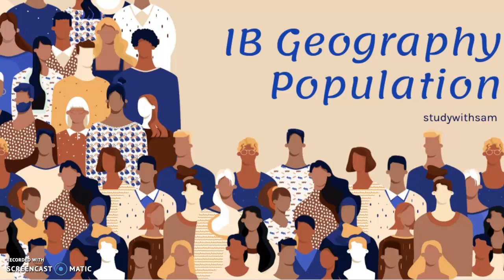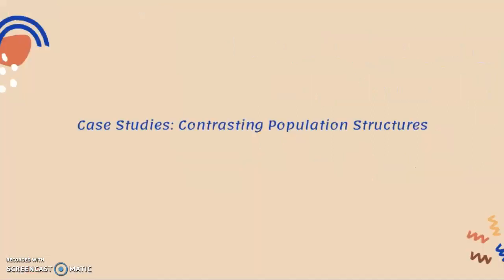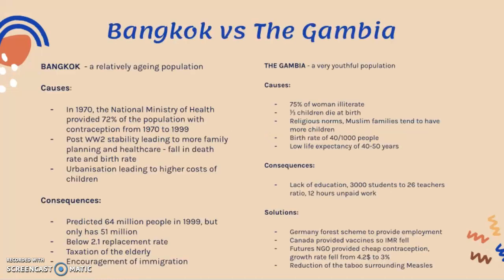This video covers the case studies for contrasting population structures. The two case studies are Bangkok versus the Gambia. Let's discuss Bangkok first.